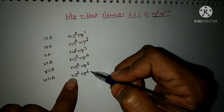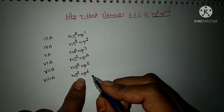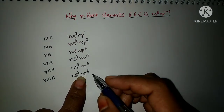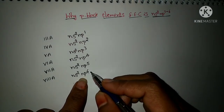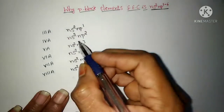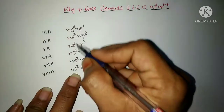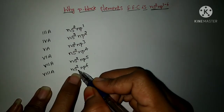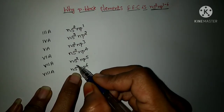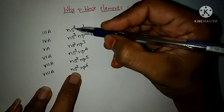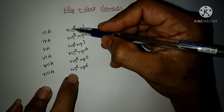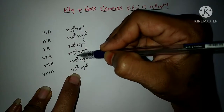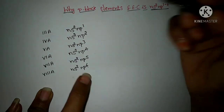How did we get these general electronic configurations? Related videos are also available in our channel, and those links are in the description — please go through them. Now students, in NS2, N is nothing but the valence shell. In the valence shell, in the S orbital, 2 electrons are present. You can observe this from the 3A to 8A group — in all groups, the valence shell S orbital has 2 electrons.